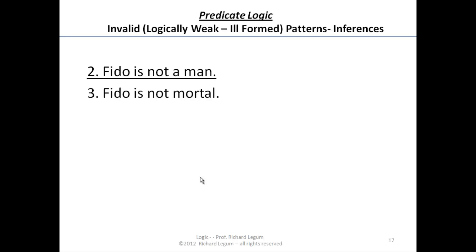Let's take a look at another invalid one. You might say, these are kind of the evil twins of the first and second valid patterns of argument. That is, they're the evil twins because the other ones were valid. These are invalid. All men are mortal. Fido is not a man. Therefore, Fido is not mortal. But we know dogs are mortal. And since we're talking about Fido the dog, we know the premises are true. The conclusion is false. It can't be a valid form of inference.